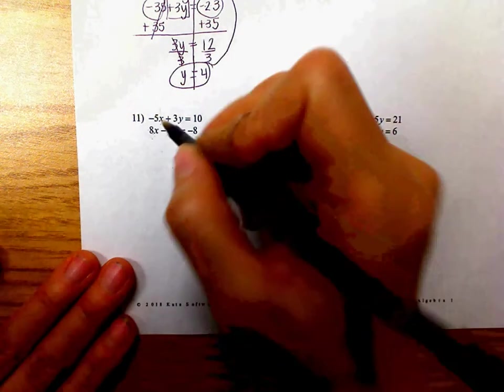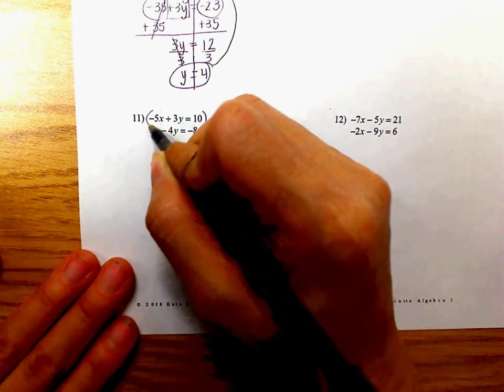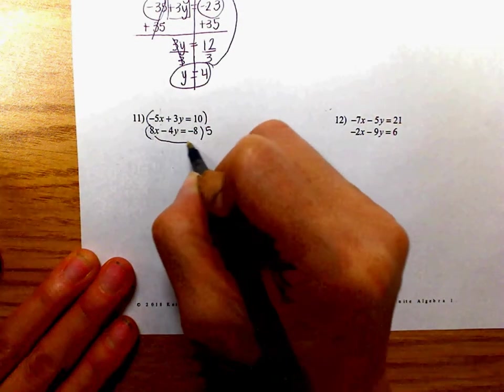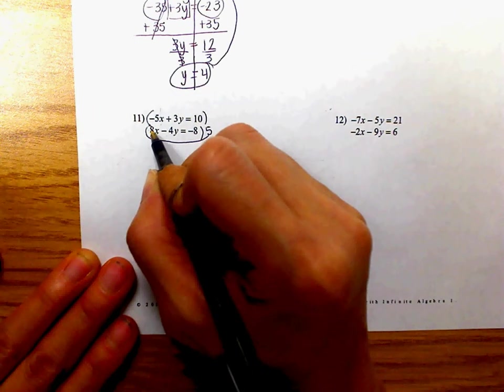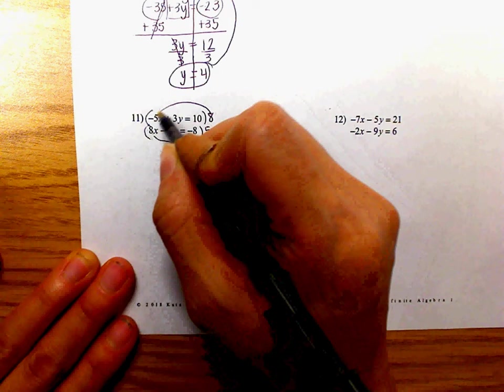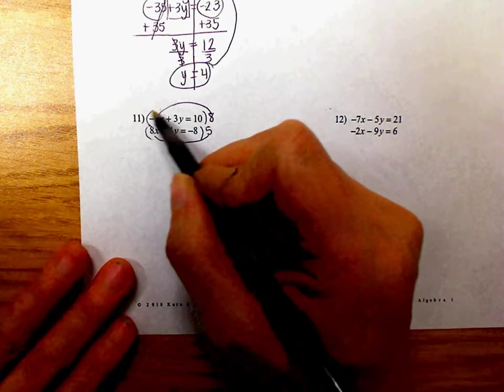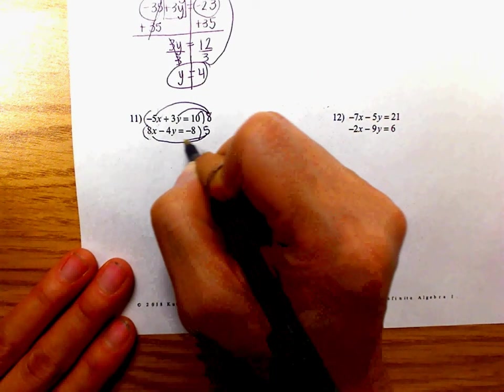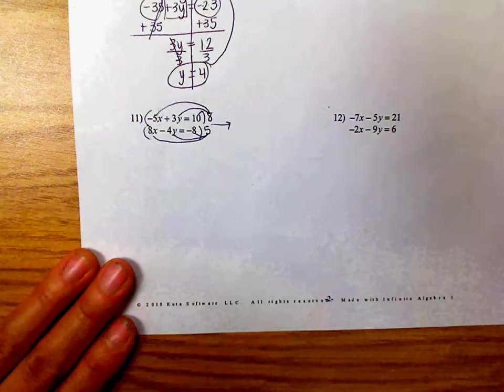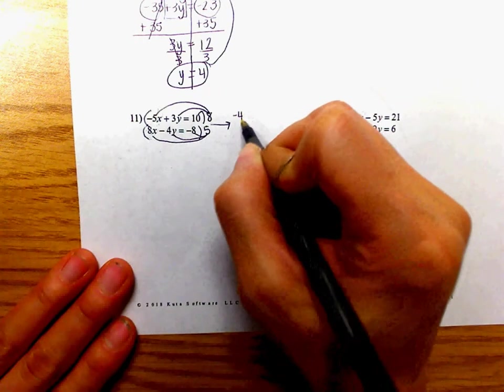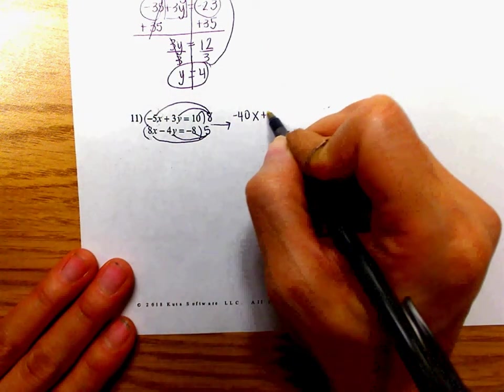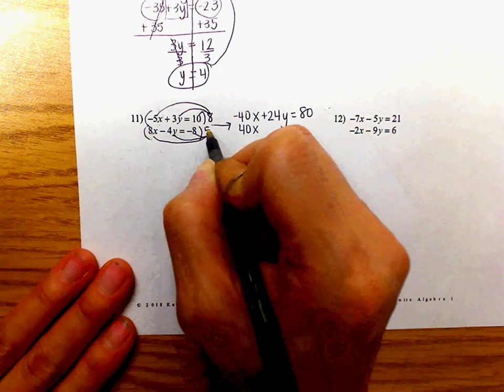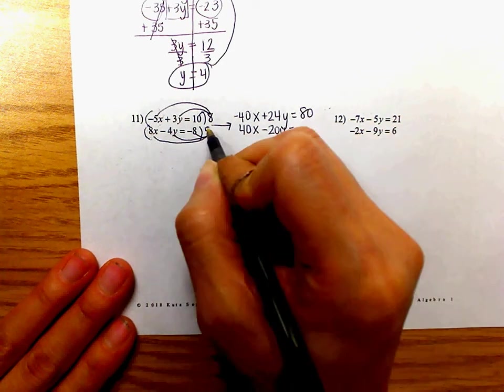In this case, I'm going to multiply top and bottom by 5, or 5 on the bottom, so that if you look at this, 5 times 8x will be 40x. Over here, I'm going to multiply by 8, and let me double check that. 8 times -5x is a -40x. So, you'll have a -40 on top, a +40. These will eventually eliminate. So, I like that, so I'm going to make sure I distribute it. If you change one term, you've got to change all the others. 8 times -5x is -40x. 8 times +3y is +24y equals 8 times 10 is 80. 5 times 8x is +40x. 5 times -4y is -20y. And then 5 times -8 is -40.